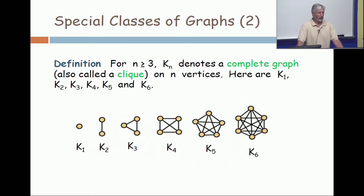Complete graphs. For n greater than or equal to—there's a typo there, that should not be n greater than or equal to 3, it should be n greater than or equal to 1.